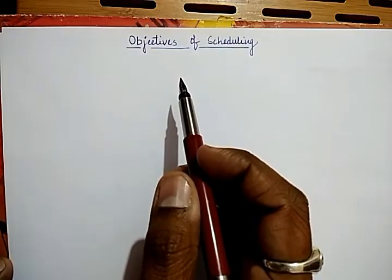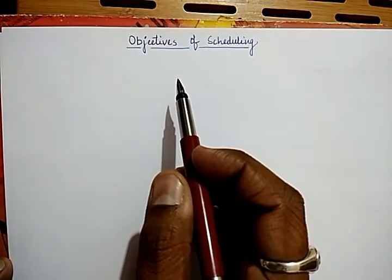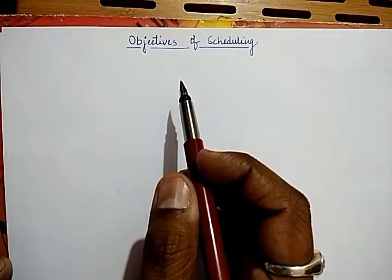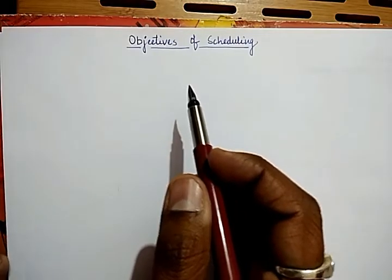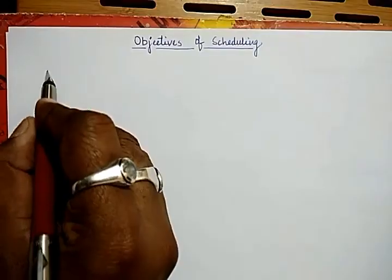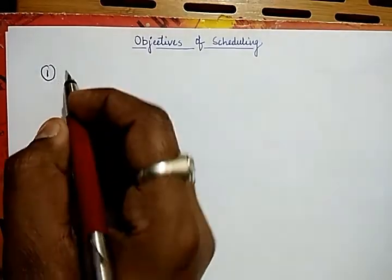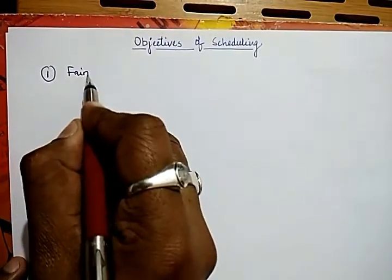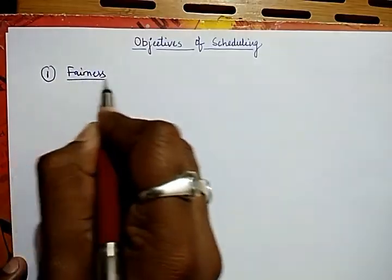There are many objectives that must be considered in the design of scheduling disciplines. Number one is called fairness.